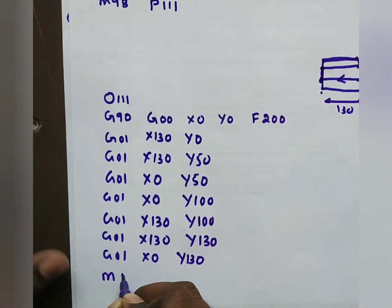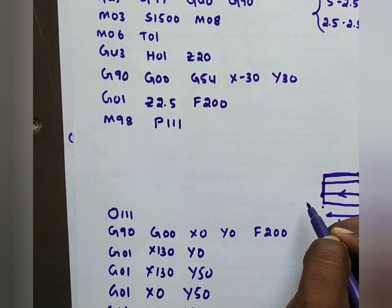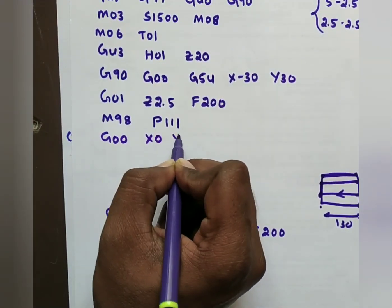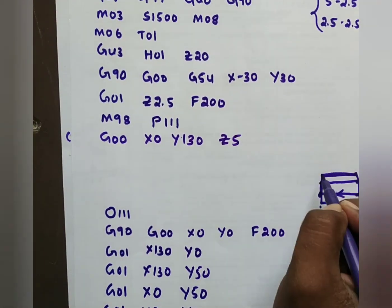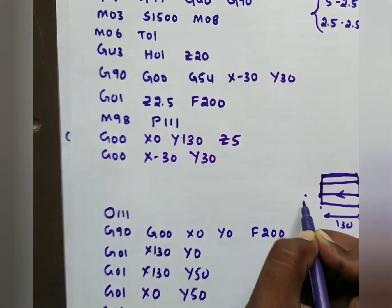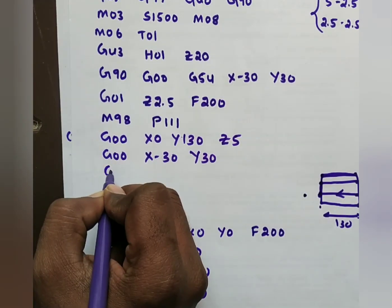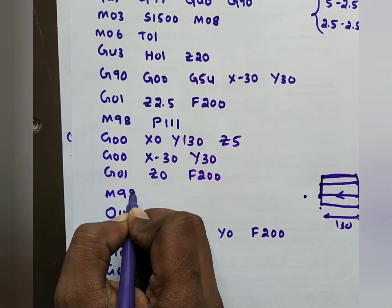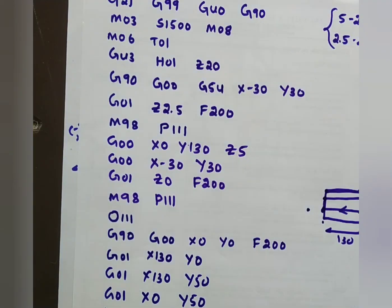End the subprogram with M99. Lift the tool: G00 Z5 at position X0 Y130, then move to reference point G00 X-30 Y30. For the second pass, give depth G01 Z0 feed 200 mm/min, then repeat the subprogram with M98 P111. This completes the facing cycle.